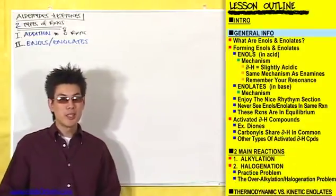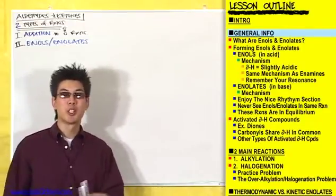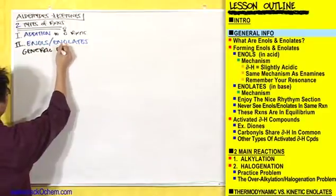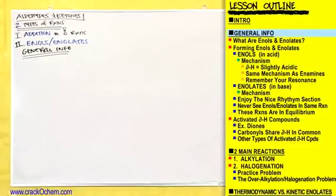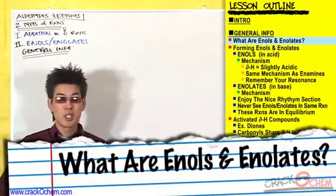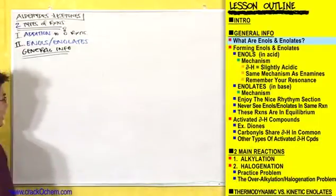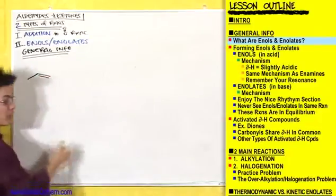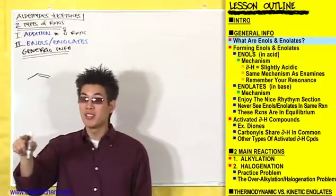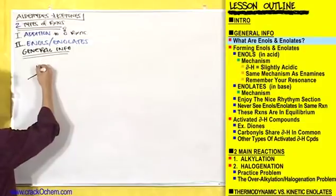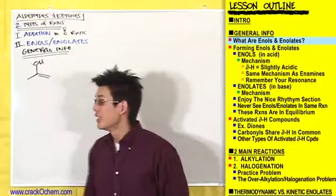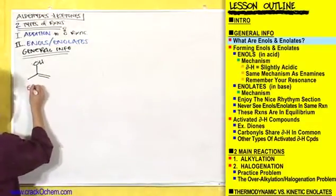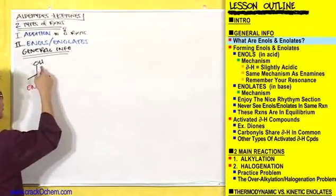Whenever we start a new topic, we always start out with some general features before talking about any of the details. Let's talk about some general info about enols and enolates. Let's start by talking about what enols and enolates even look like. The name kind of gives it away. An enol is going to have a double bond — double bonds are known as alkenes, so that's where the 'en' comes from — and it's going to have an OH group on it, also known as an alcohol. So: en from alkene, ol from alcohol. Enol. That's where this name comes from.